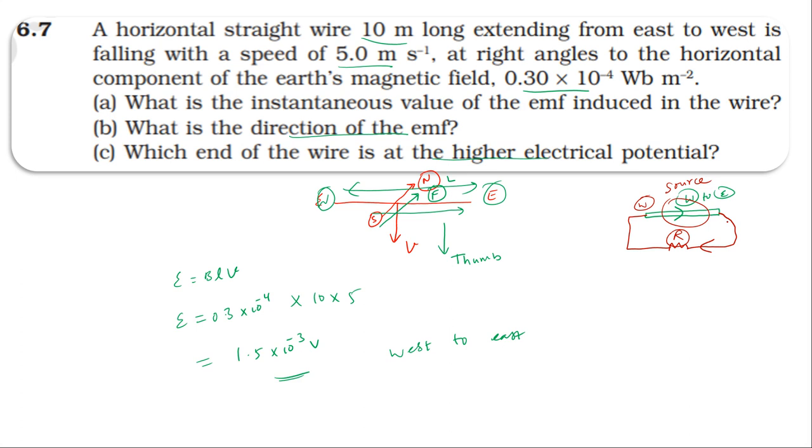Like in a battery - outside the battery, current flows from positive terminal to negative terminal. Inside the battery, from negative to positive. The positive terminal is at higher potential. Therefore, east is at the higher potential.